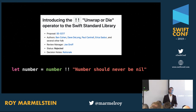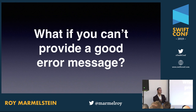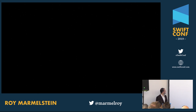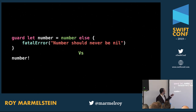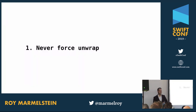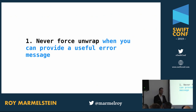But what if you can't provide a good error message? What if you don't really know why this thing is nil or there could be a million reasons? Is there really a difference between guard let with a fatal error saying "numbers should never be nil" and just force unwrapping? In my opinion, there isn't — they're pretty much equivalent. So we could expand the rule to say: never force unwrap when you can provide a useful error message that will help you in development in the future.